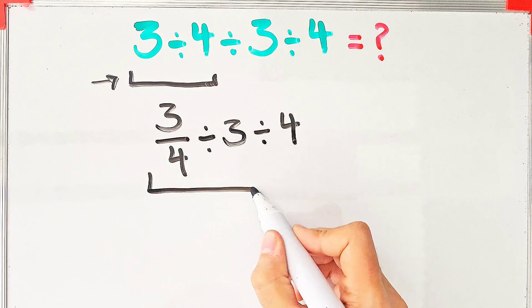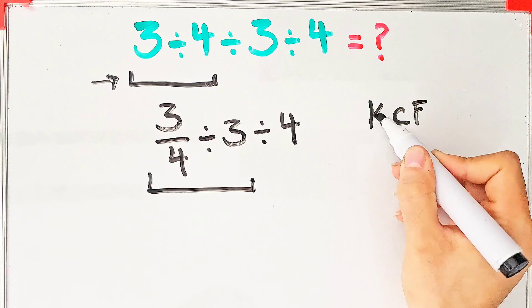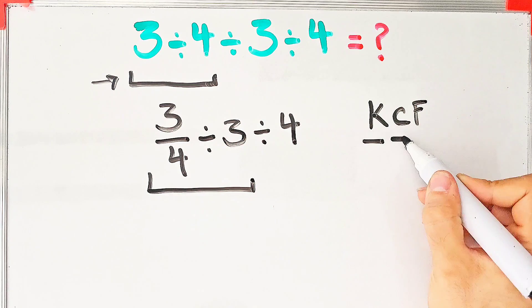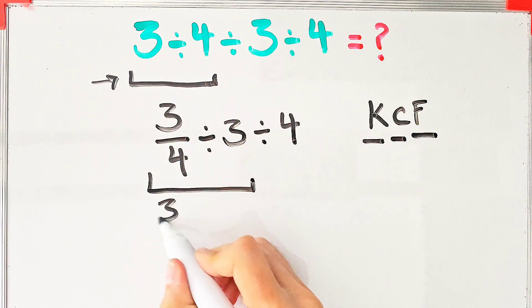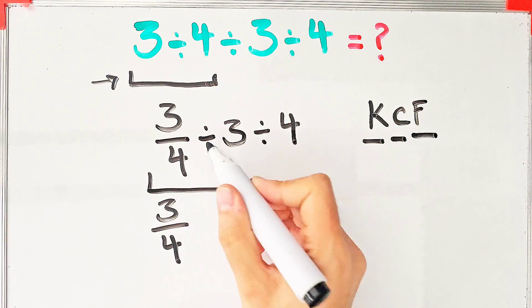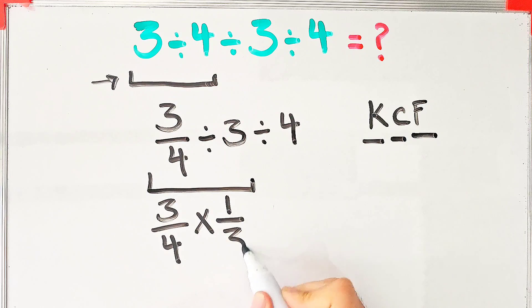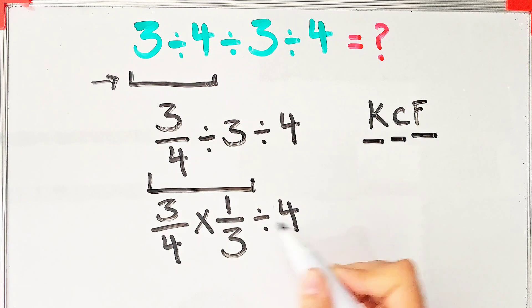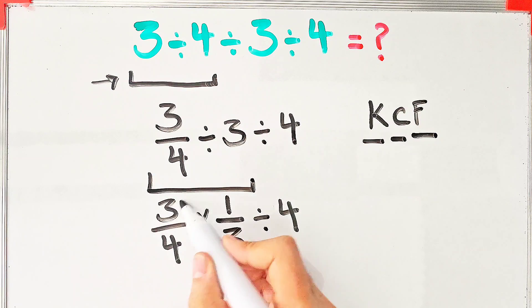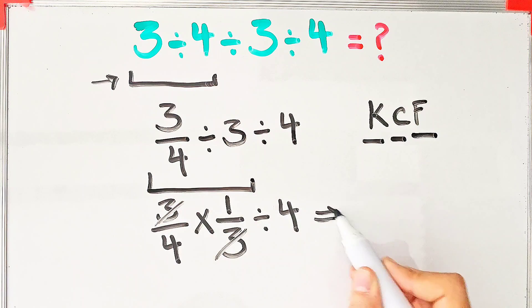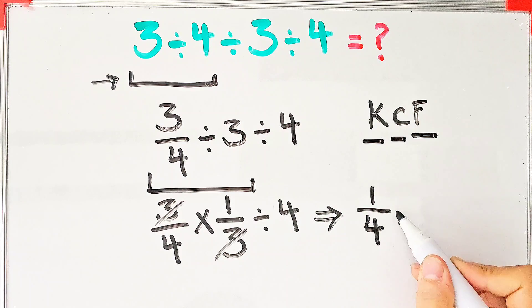To solve this part we need to follow the KCF rule. In this rule, K stands for Keep, C stands for Change, and F stands for Flip. We keep the first fraction as it is, then we change the sign, and then we flip the number. Now we have 3 over 4 times 1 over 3, divided by 4. We simplify this part and we have 1 over 4 divided by 4.